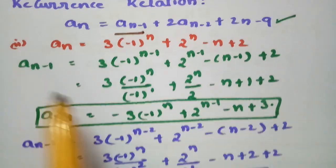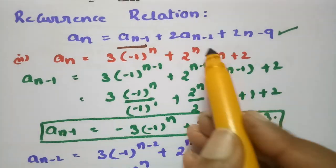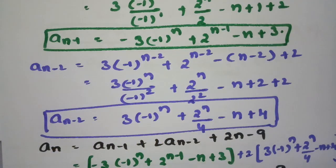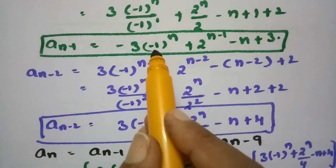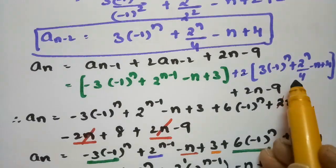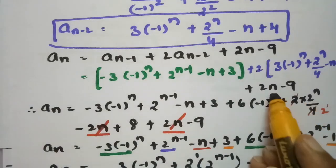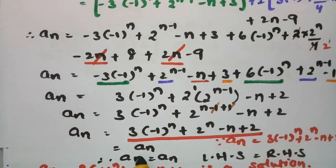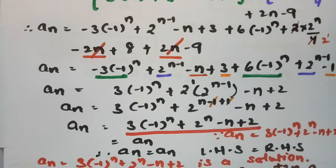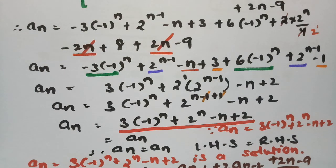LHS equals RHS, therefore An is the solution for the given recurrence relation. This is how we solve such problems — it will be very simple if you follow these simple steps. Please have a look at my next video too, it will be immensely helpful for your preparation. Thank you so much.